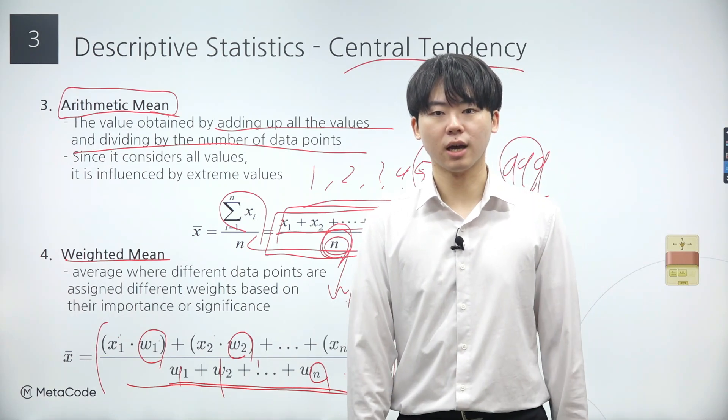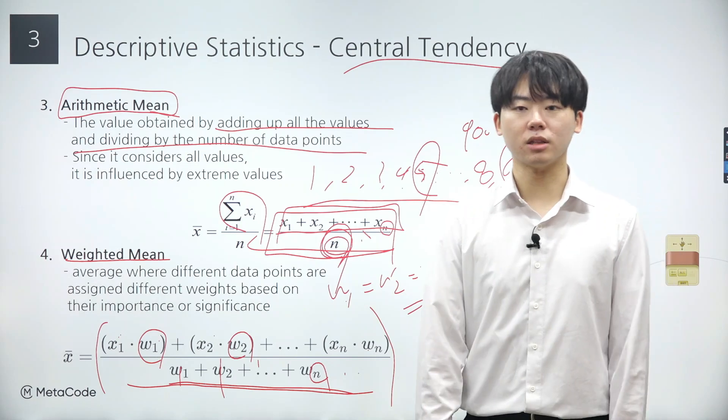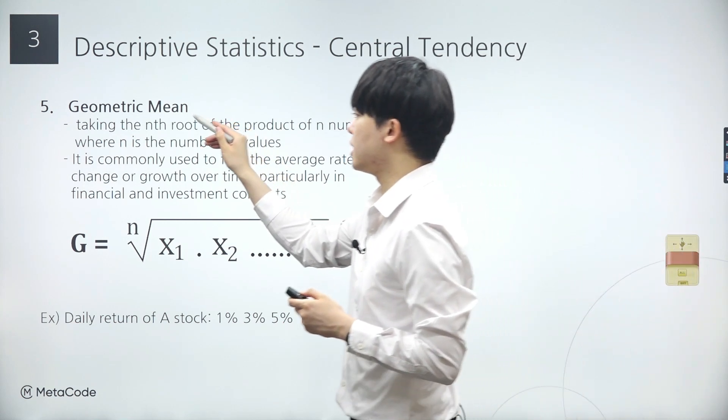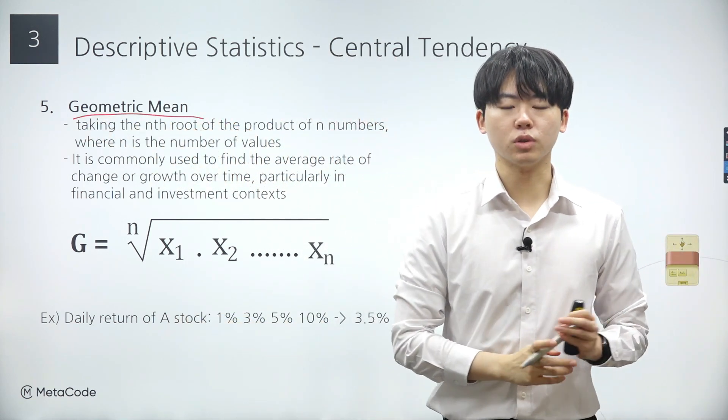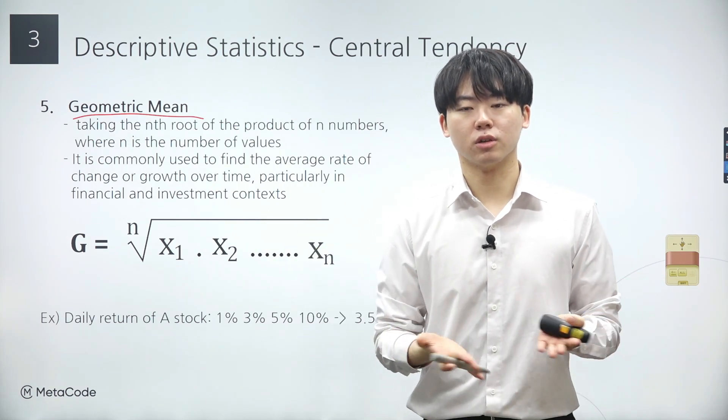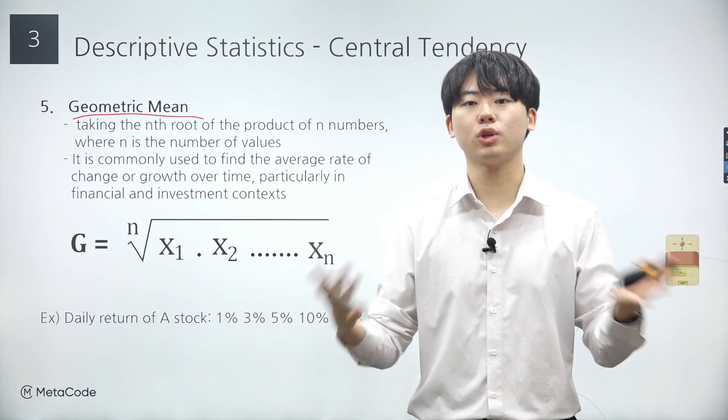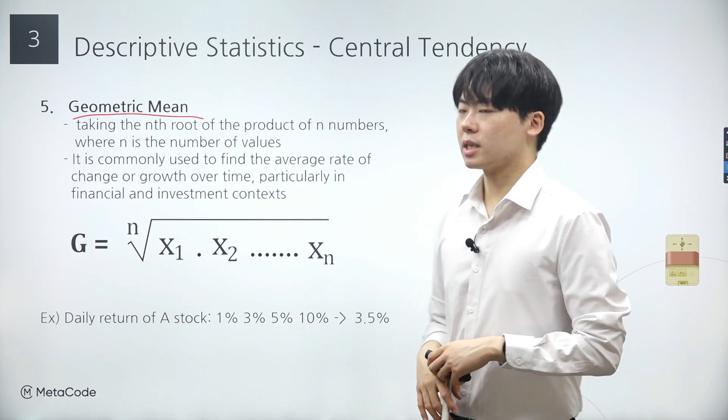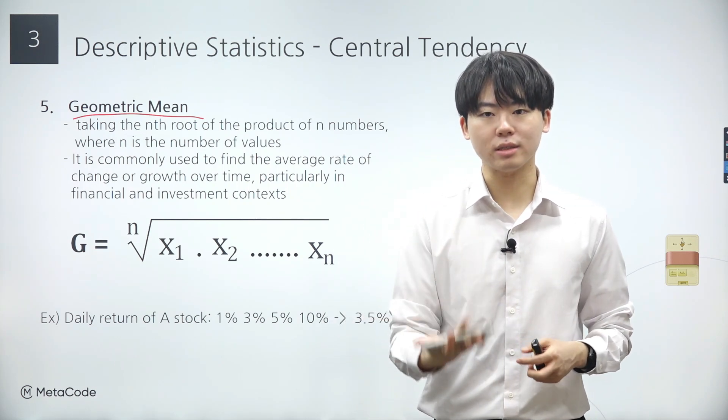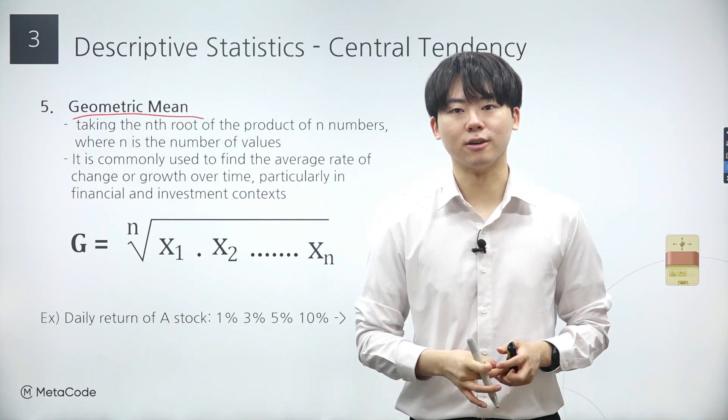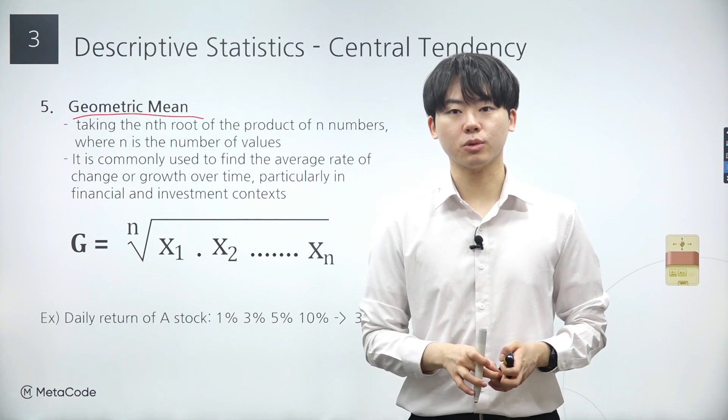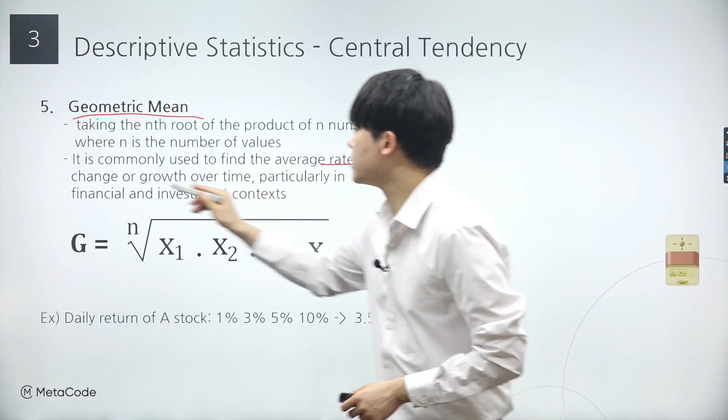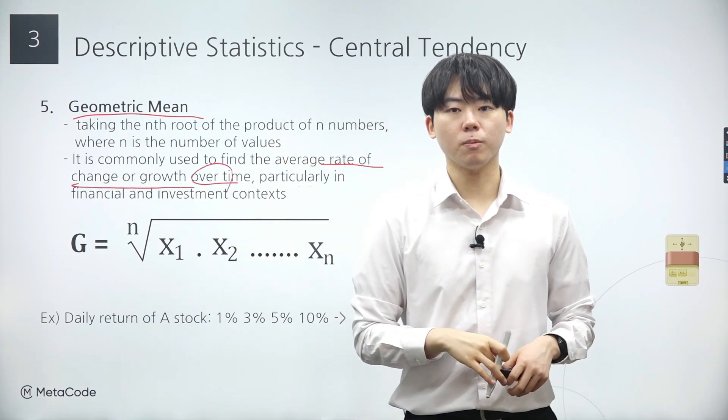So far, we've explored four distinct types of statistics used to measure the central tendency of a data set. Now, we turn our attention to the final measure of central tendency, the geometric mean. Unlike the arithmetic mean and weighted mean, which involve addition and division, the equation for the geometric mean entails multiplication and root extraction. While the geometric mean might not be as commonly used as the arithmetic mean in real life, it holds significant relevance in certain fields. Personally, working in the financial sector, I find myself using the geometric mean almost daily. However, its frequency of use may vary among data scientists in different domains.